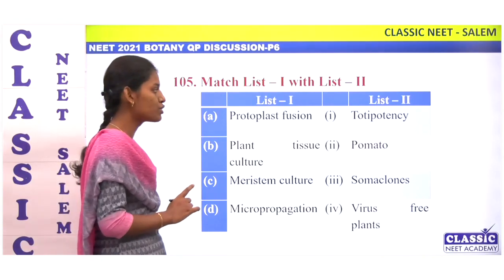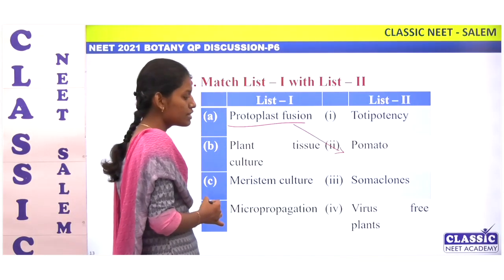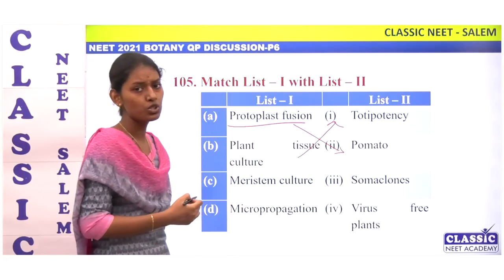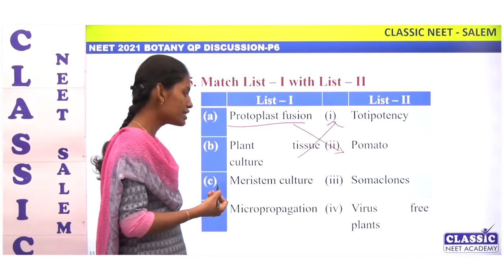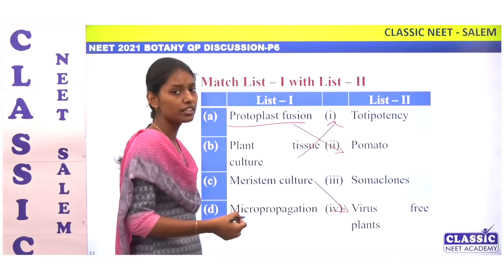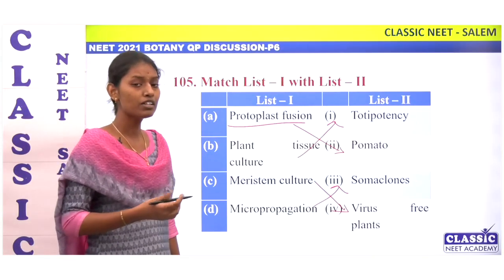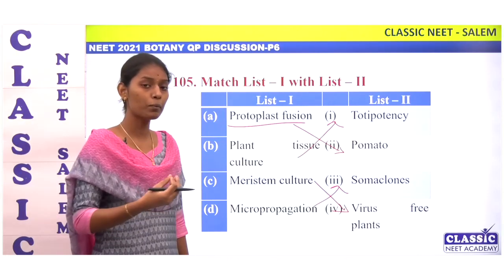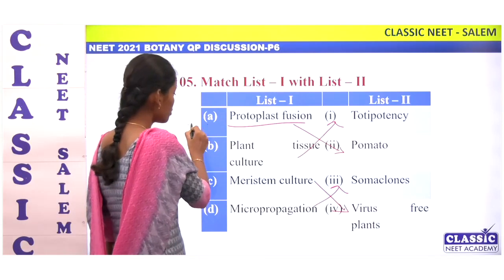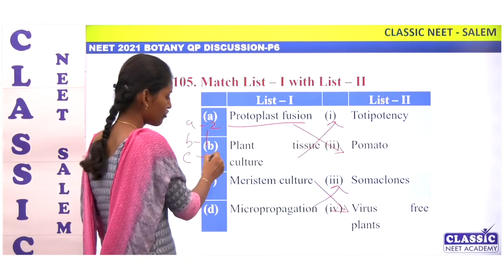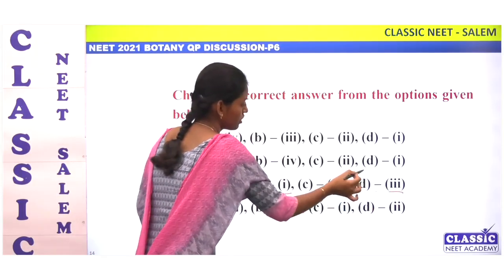Next: match list 1 with list 2. Protoplasmic fusion is an example of somatic hybridization — example is Pomato. Plant tissue culture works on the principle of totipotency — the ability of a cell to generate into a whole organism. Meristem culture is used to obtain virus-free plants. Micropropagation produces somaclones — identical plants propagated in large numbers in short duration. So A is 2, B is 1, C is 4, D is 3. Option 3.